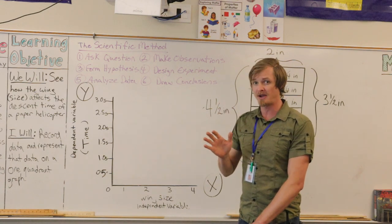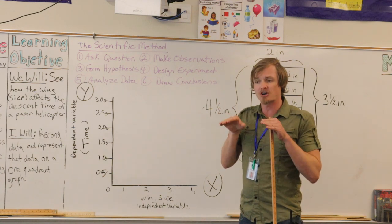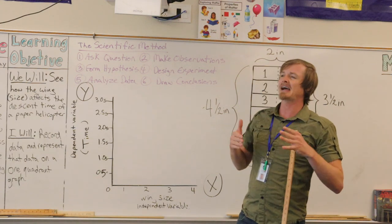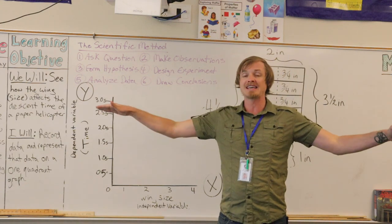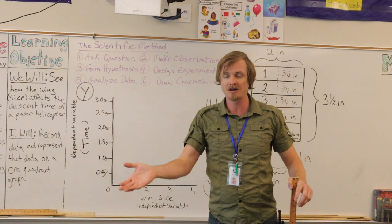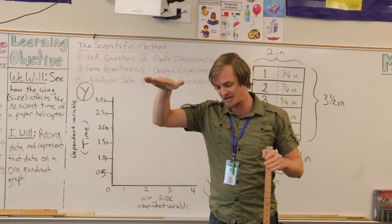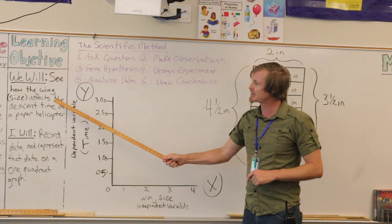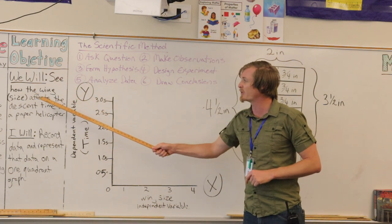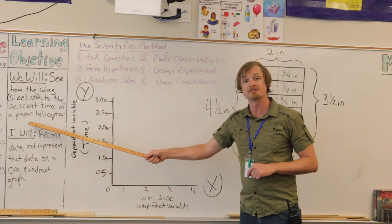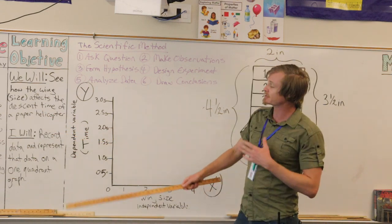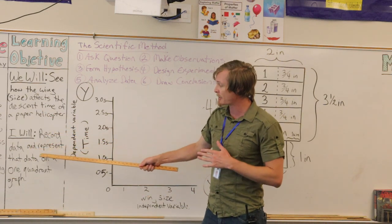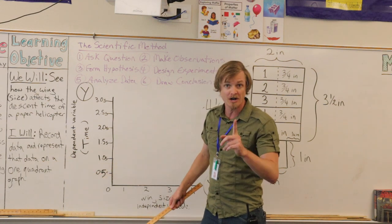We're going to construct paper helicopters and we're going to start with really small wings. I want to see how the bigger the wings get if the air plays a role in how fast our paper helicopter will fall down to the ground. I have my lesson objectives here. We will see how the wing size affects the descent time of a paper helicopter.